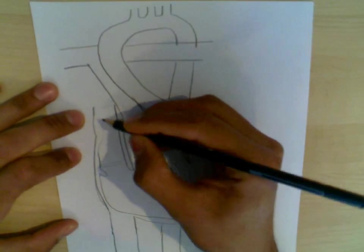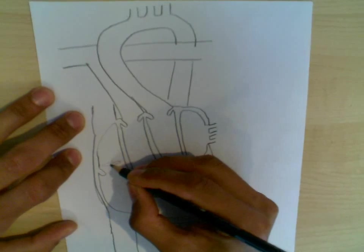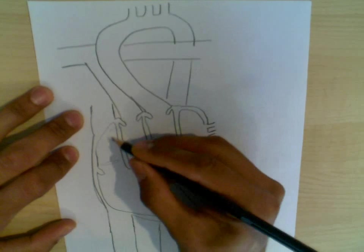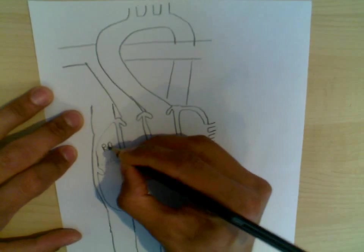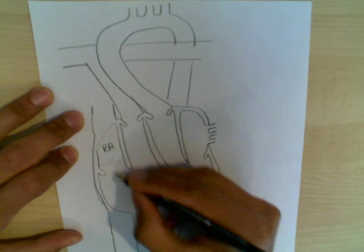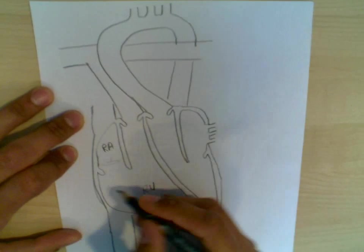We have the superior vena cava and the inferior vena cava. Both, this is the inferior vena cava emptying in here. Both emptying into the right atrium. So this is the right atrium. We then have the right ventricle. Before the blood reaches the right ventricle, it goes through a valve.